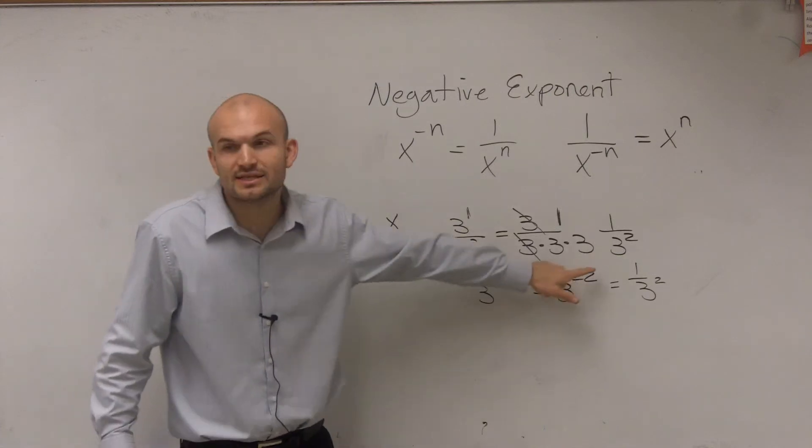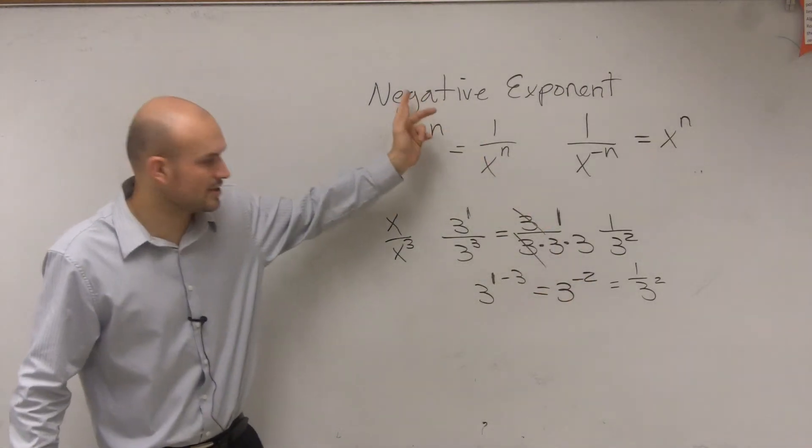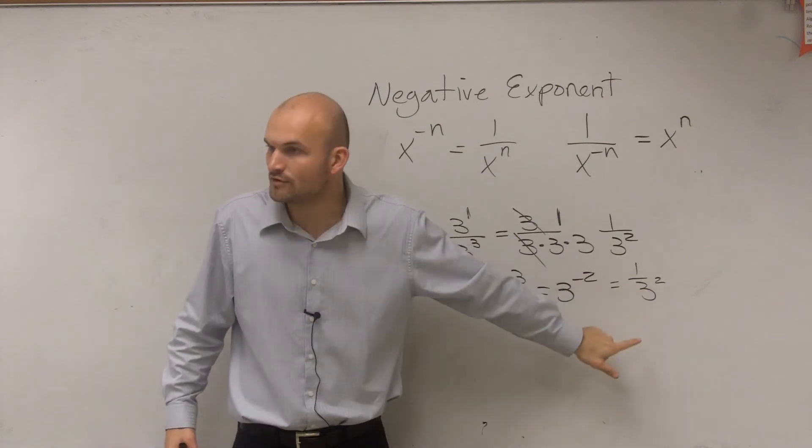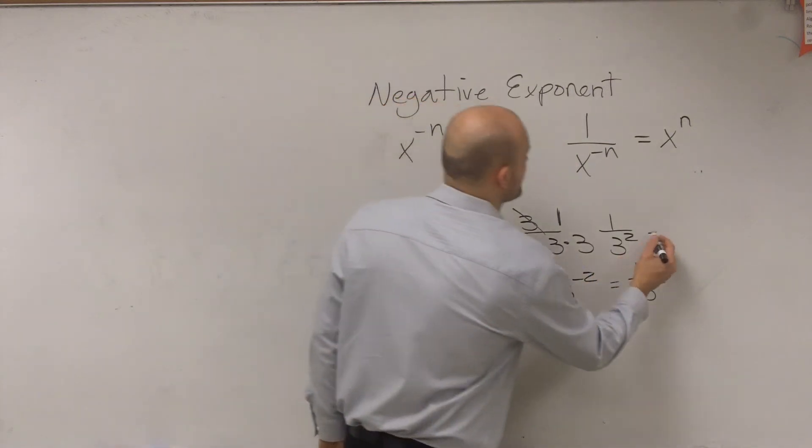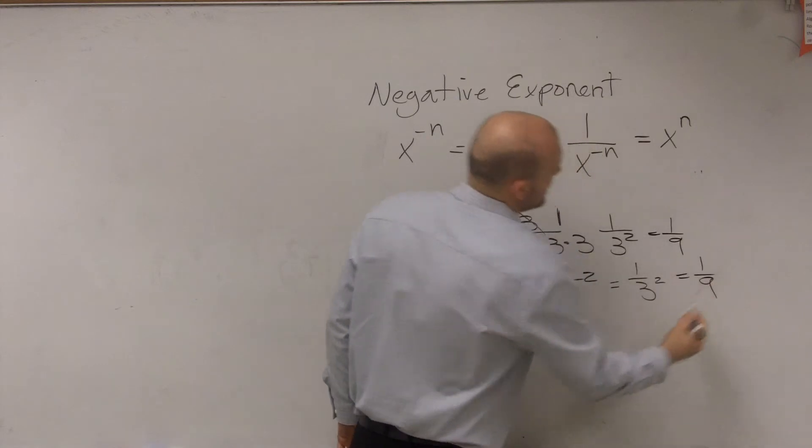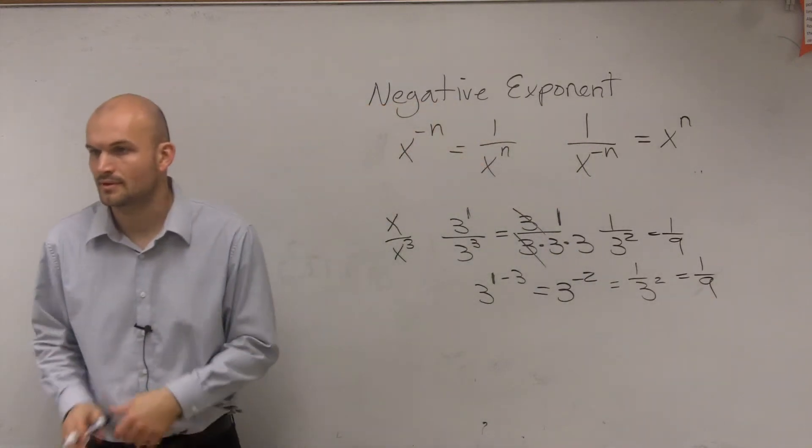I get a 3 to the negative squared. And then I apply the negative exponent rule, and I rewrite that as 1 over 3 squared, which we can just simply write as 1 over 9.